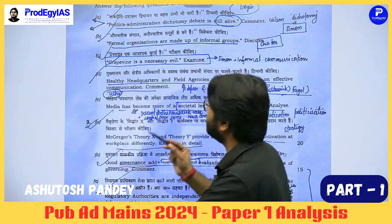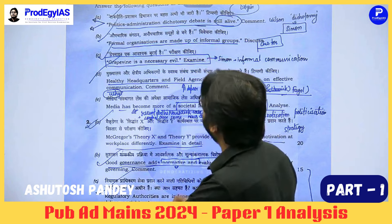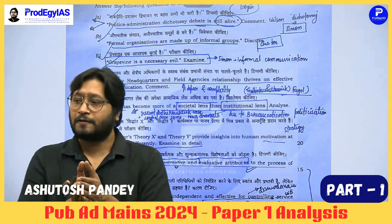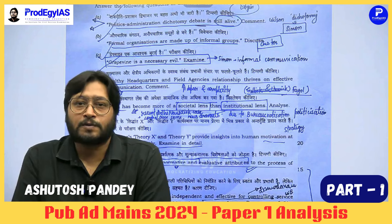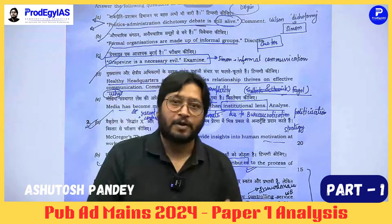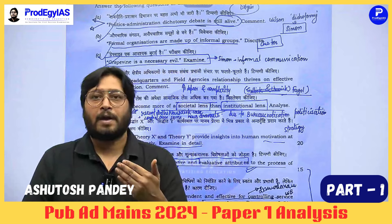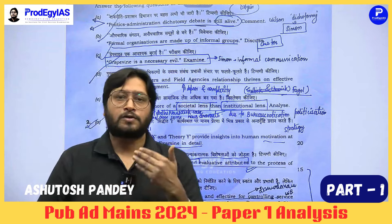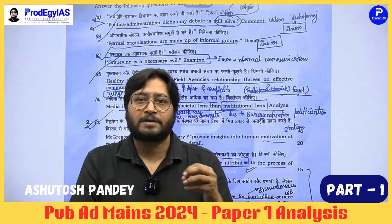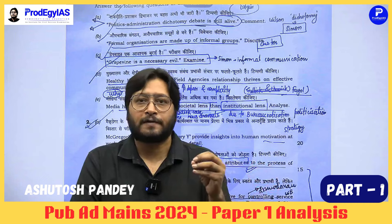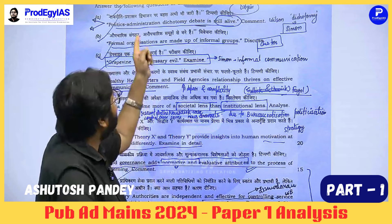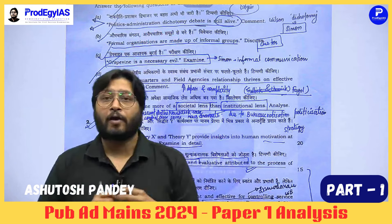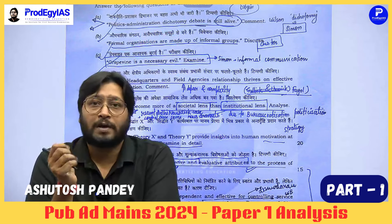When writing about dichotomy, it is a landmark question. Focus first on defining what dichotomy is. Wilson's idea was based on the belief that if administration is made autonomous — free from political influence — it can perform better and be more efficient. Wilson's core idea that the detailed and systematic execution of law is public administration emphasizes the executive role of administration. There are two or three aspects to cover: first, the dichotomy as a concept.